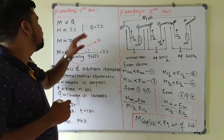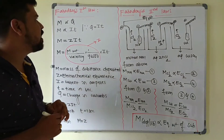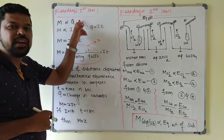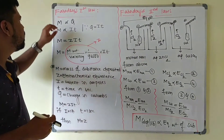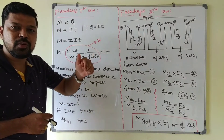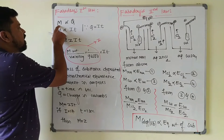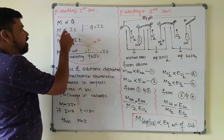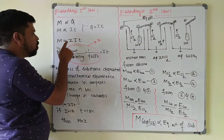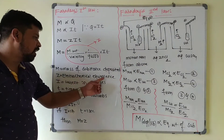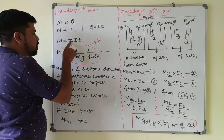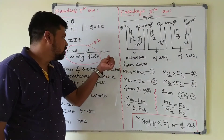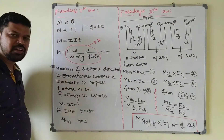Now we discuss Faraday's First Law of Electrolysis. According to Faraday's first law, the mass of the substance deposited or liberated at the electrode is directly proportional to the quantity of electricity passed through the electrolytic solution. Since Q = I × T, we get M ∝ It. Removing the proportionality sign: M = Z × I × t. Z is the proportionality constant called electrochemical equivalence. Substituting Z: M = (molecular weight / valency) × (1 / 96,500) × I × t.